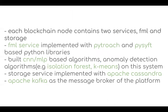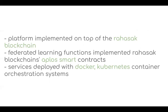Each blockchain node contains two services: the federated machine learning service and the storage service. The federated machine learning service is implemented with PyTorch and PySwift Python libraries. We built various CNN and MLP algorithms as well as anomaly detection algorithms on top of this system. The storage service handles all off-chain storage of the ledger, storing model information, global model information, and any off-chain data. We use Apache Cassandra for off-chain storage and Apache Kafka as the message broker for the platform.